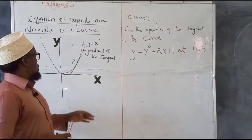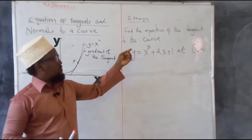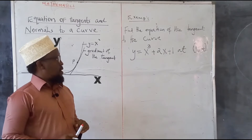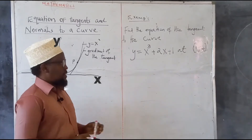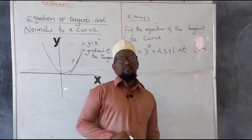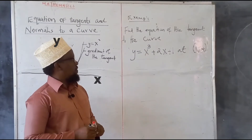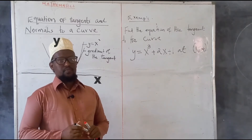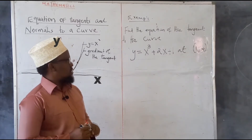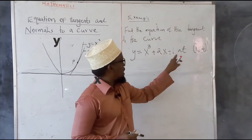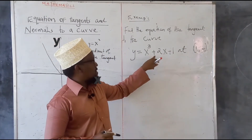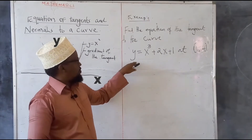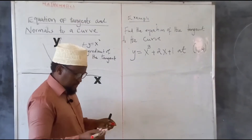We will use this idea to find the equation of the tangent to the curve y equals x cubed plus 2x plus 1 at the point (1, 4). So first we have to find the gradient of this point on the curve, and to do that we have to differentiate the equation.